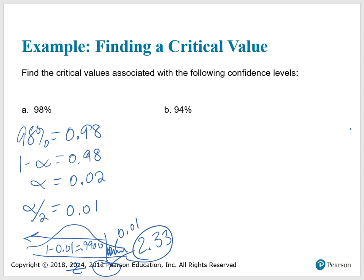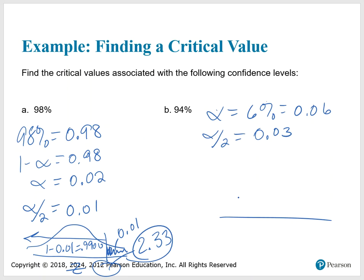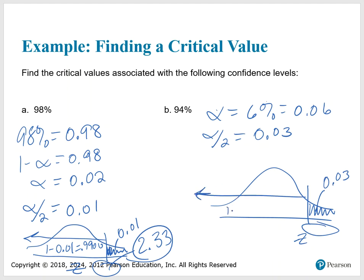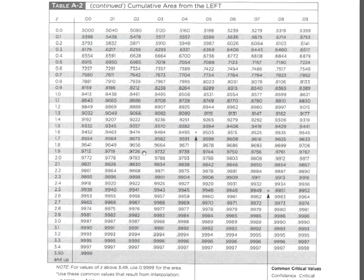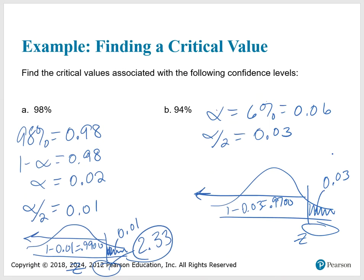For 94% confidence: alpha is 6%, or 0.06. Alpha over 2 is 0.03. Looking for the Z where the area to the left is 1 minus 0.03, or 0.9700. The closest value in the table is 0.9699, which gives a critical value of 1.88.